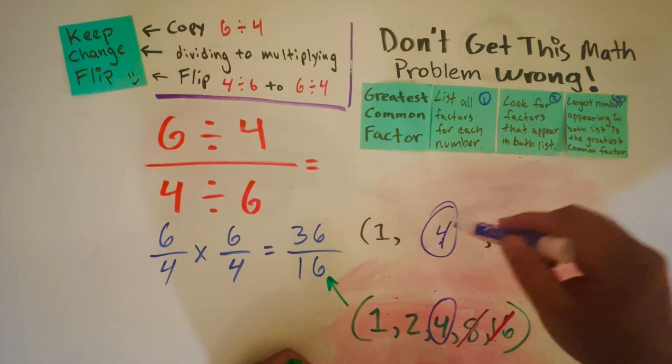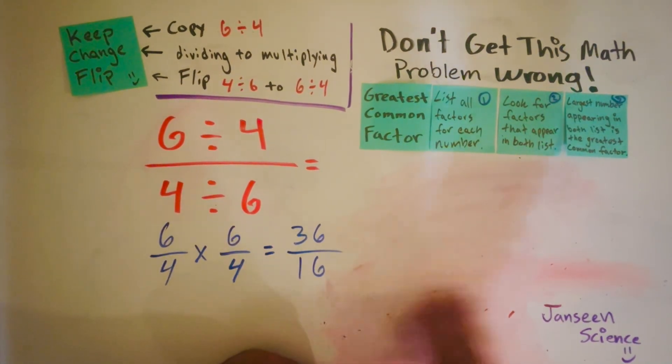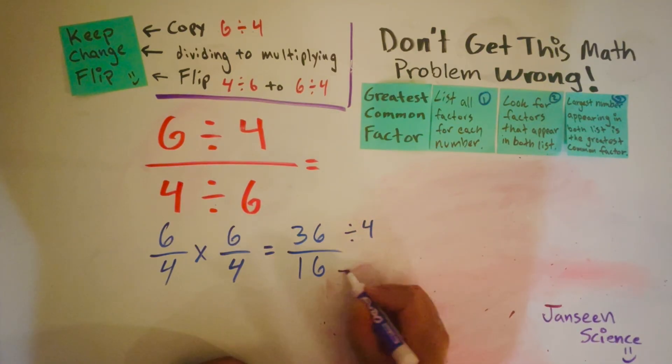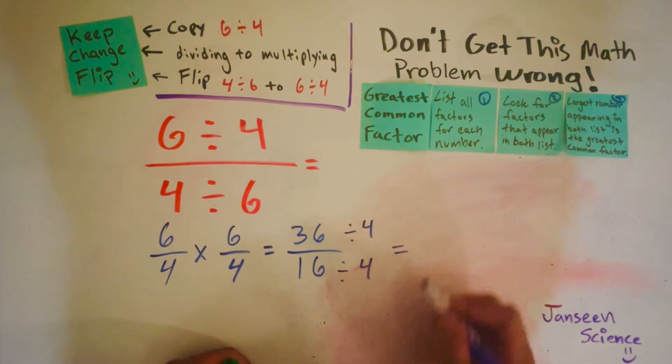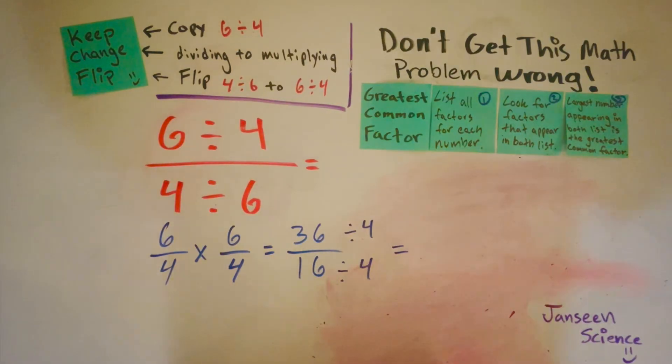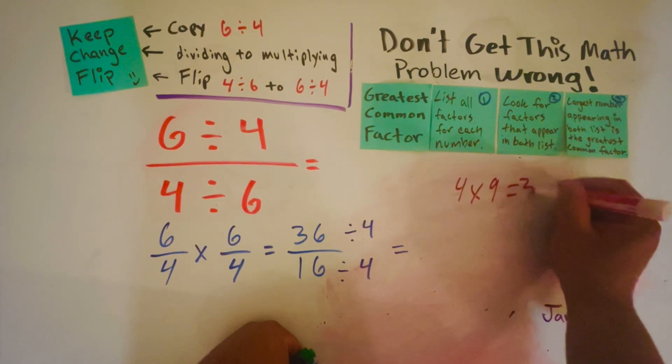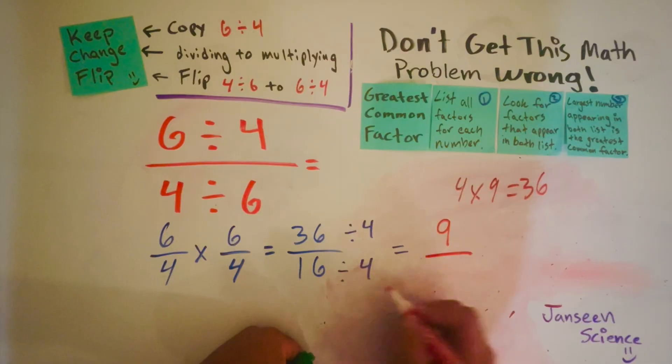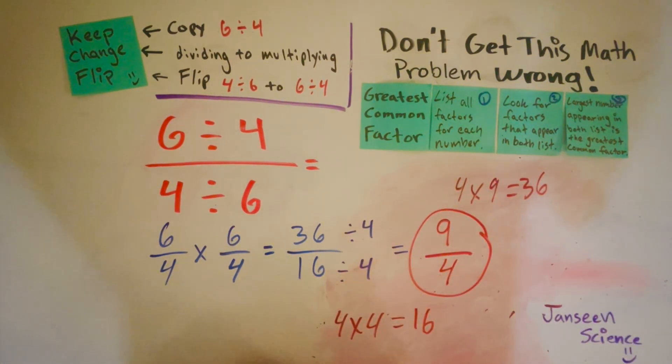They appear in both lists. So I'll go ahead and erase all this and write 36 divided by 4 on both sides, at the top and the bottom, 16 divided by 4. So 36 divided by 4, I know 4 times 9 is 36, so it's going to be 9 on top. On the bottom, 16 divided by 4, I know 4 times 4 is 16, and that is 4. So the answer is 9 over 4. And there you go.